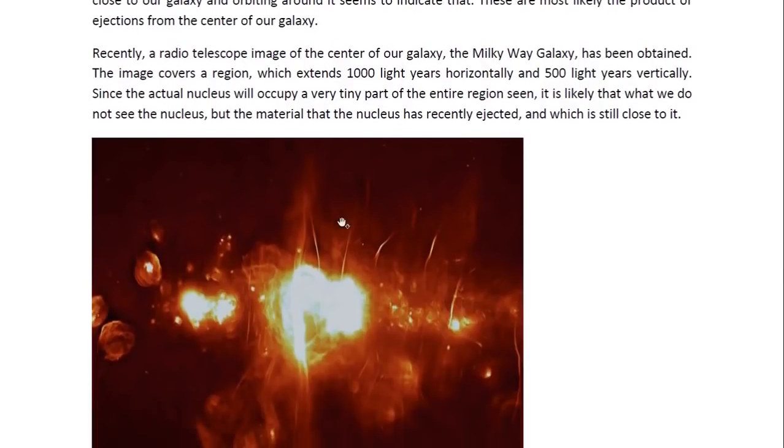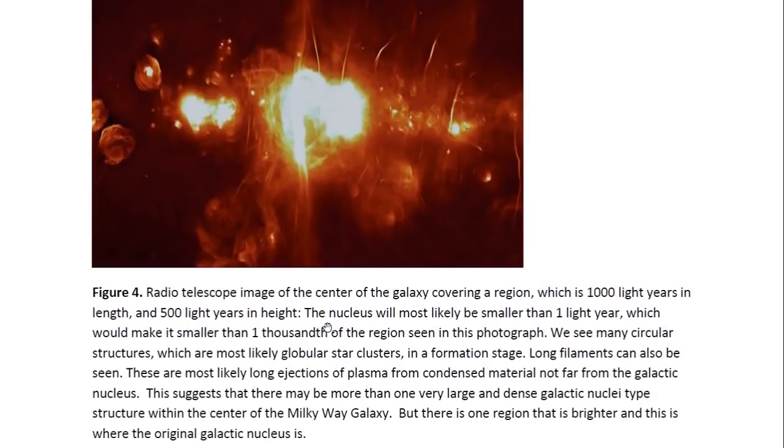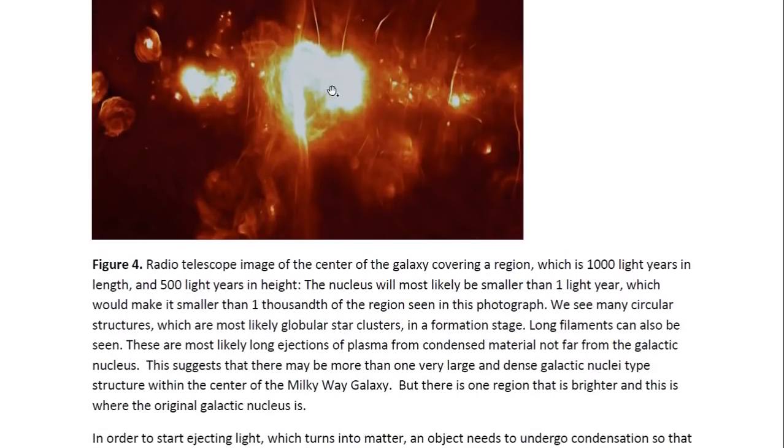Recently, a radio telescope image of the center of our galaxy, the Milky Way galaxy, has been obtained. The image covers a large region. It extends 1,000 light-years horizontally and 500 light-years vertically. Since the actual nucleus will occupy a very tiny part of the entire region seen, it is likely that we do not actually see the nucleus, but the material that the nucleus has recently ejected and which is still close to it. So the nucleus would be a very tiny region, a tiny speck in this whole region seen here.